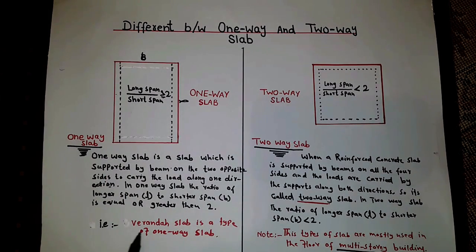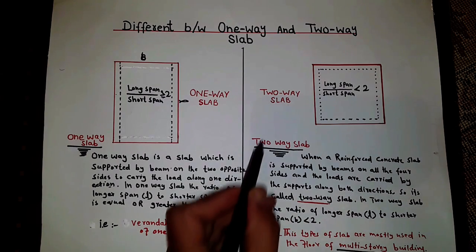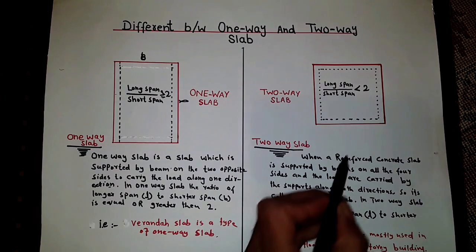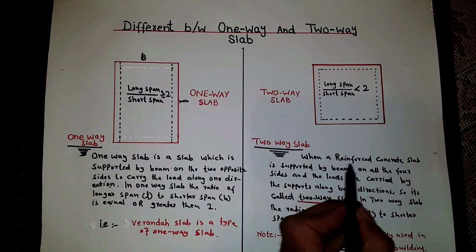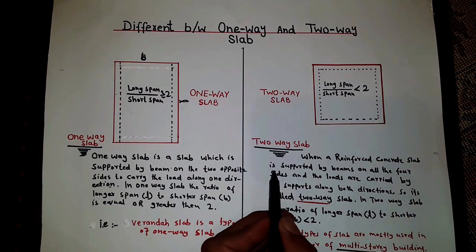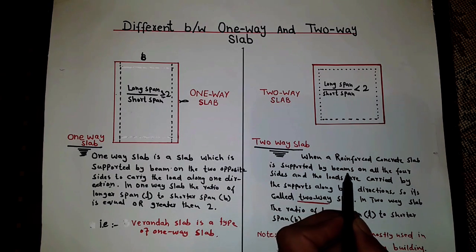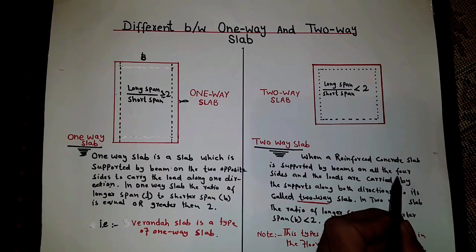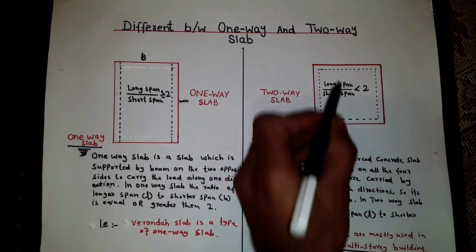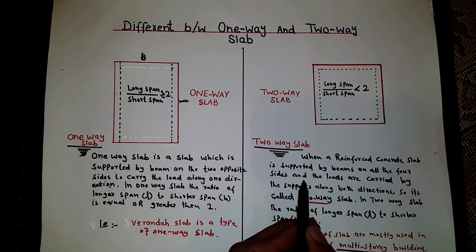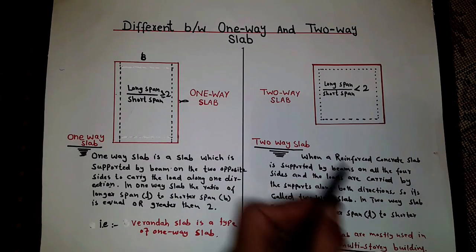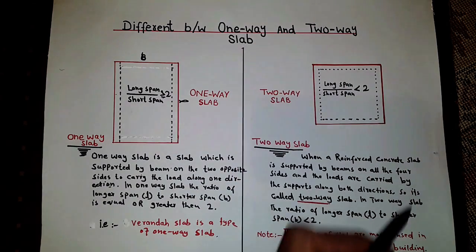This is an example where the slab is a type of one-way slab. Now for two-way slab: when a reinforced concrete slab is supported by beams on all four sides — side one, two, three, and four — and the loads are carried along both directions, the x-direction and y-direction, it is called a two-way slab.